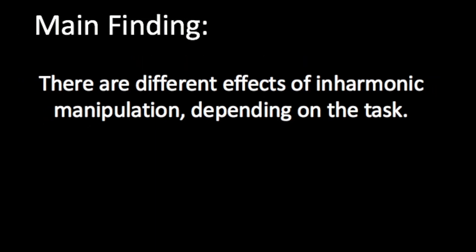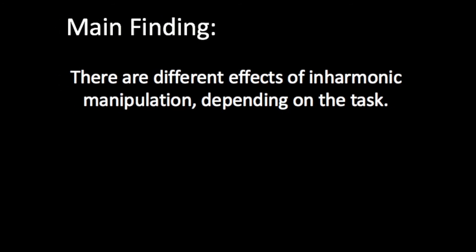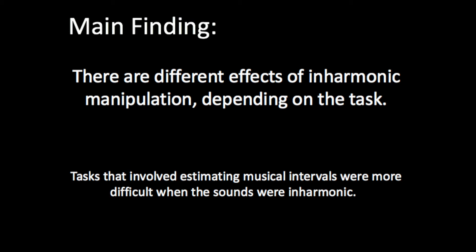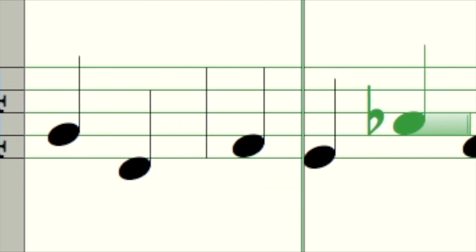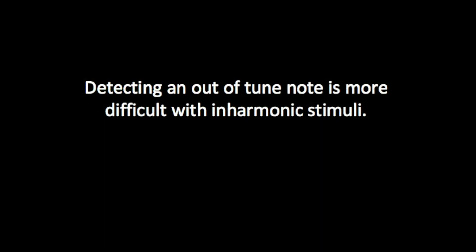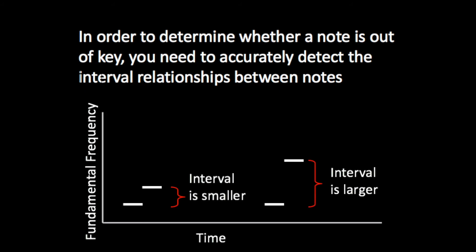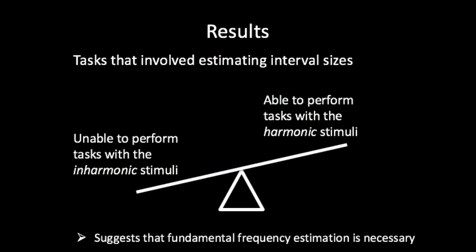The main finding of this paper was that there are different effects of our inharmonic manipulation depending on the task. Tasks that involved estimating musical intervals were more difficult when the sounds were inharmonic. For example, in a melody with harmonic tones you can tell that a sour second-to-last note was played by mistake, but with inharmonic notes it is much harder to hear whether that note fits in with the melody. In order to determine whether a note is out of key, you need to accurately detect the interval relationships between notes — and we found tasks involving estimating interval sizes were more difficult when sounds were inharmonic.